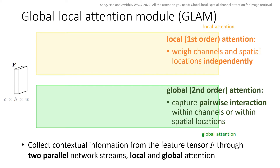Let me briefly explain each component of the GLAM module. We collect information from the feature tensor F through two parallel network streams. The Global Attention Module captures parallel interaction within channels or within spatial locations. On the other hand, local attention weights channels or locations independently based on contextual information obtained by pooling.